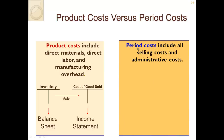Period costs, on the other hand, are all selling and administrative costs. This would include salaries, sales commissions, and advertising. You would recognize these as expense items or income statement items.